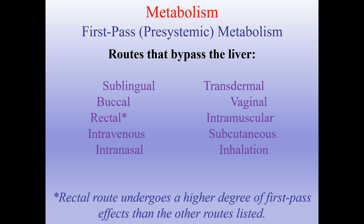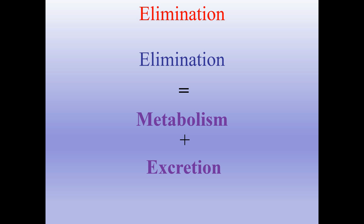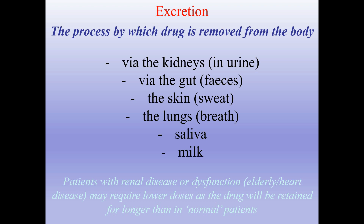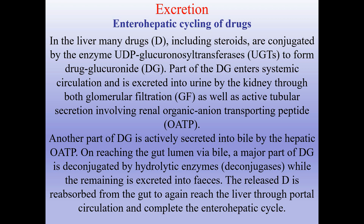Elimination equals metabolism plus excretion — via kidneys in urine, via gut in feces, the skin in sweat, the lungs in breath, and also saliva and milk. Patients with renal disease or dysfunction, for example the elderly or those with heart disease, may require lower doses as the drug will be retained longer than in normal patients. On this slide you can see enterohepatic cycling of drugs.